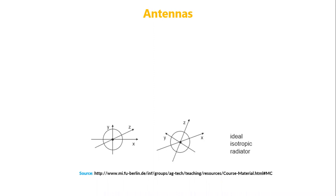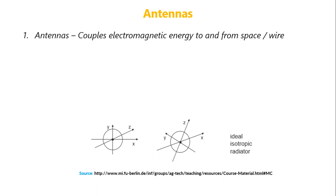Welcome. The topic we will be discussing in this lecture is antennas — specifically the different types of antennas. Antennas are something like a transceiver; they act as both a transmitter and a receiver. An antenna couples electromagnetic energy to and from space, or to and from any wired communication channel like a coaxial cable or any other conductor.